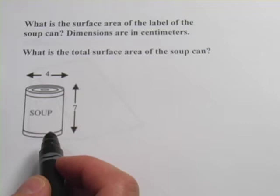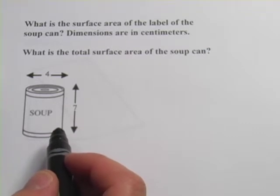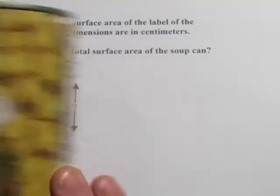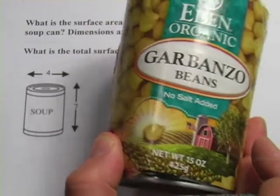And the first thing they're giving us here is a soup can. And actually, so you've got a couple of things going on with this. Here's a soup can, well, a garbanzo bean can.